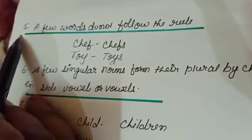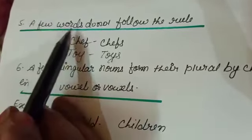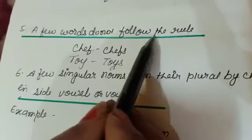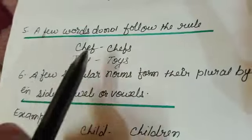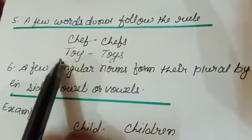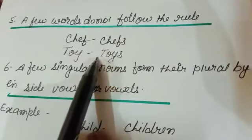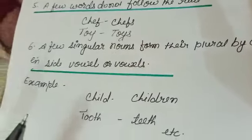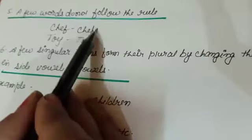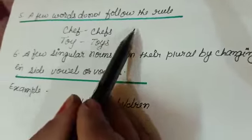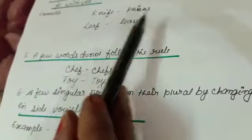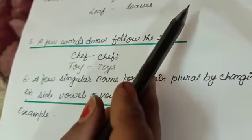Rule number 5: a few words do not follow the rule. Examples: safe → safes, toy → toys. See here children, these words are not following the rule of changing singular to plural number.